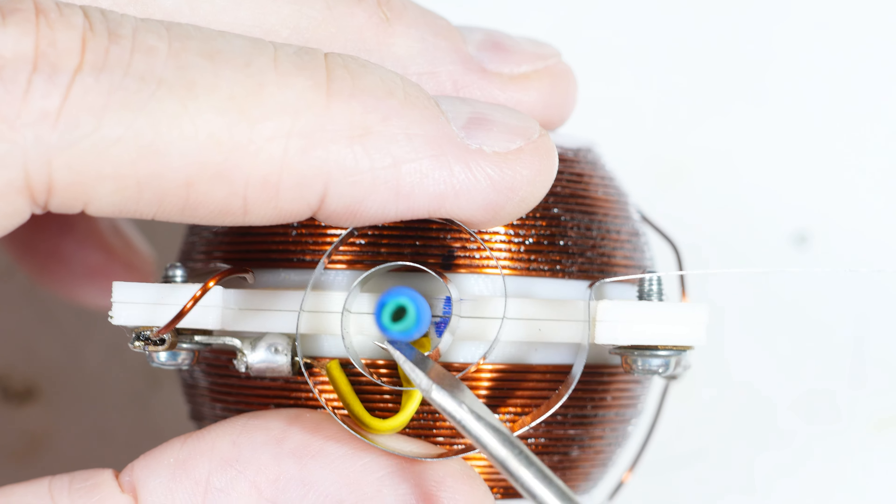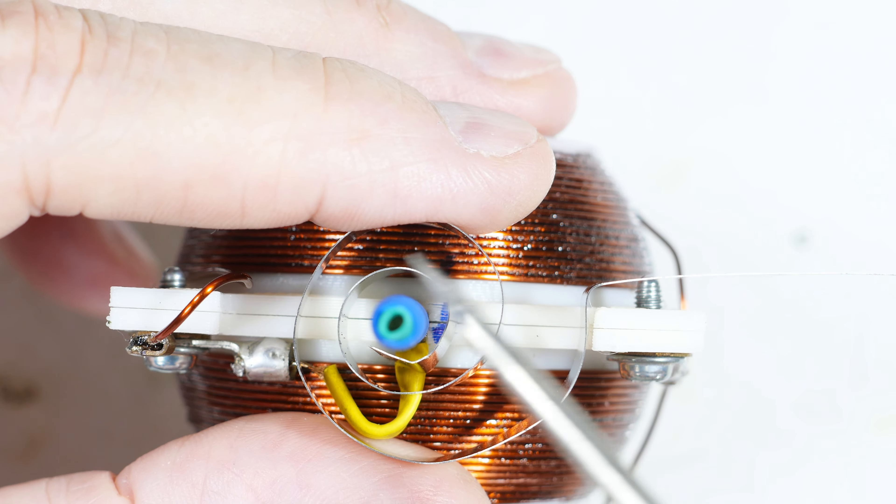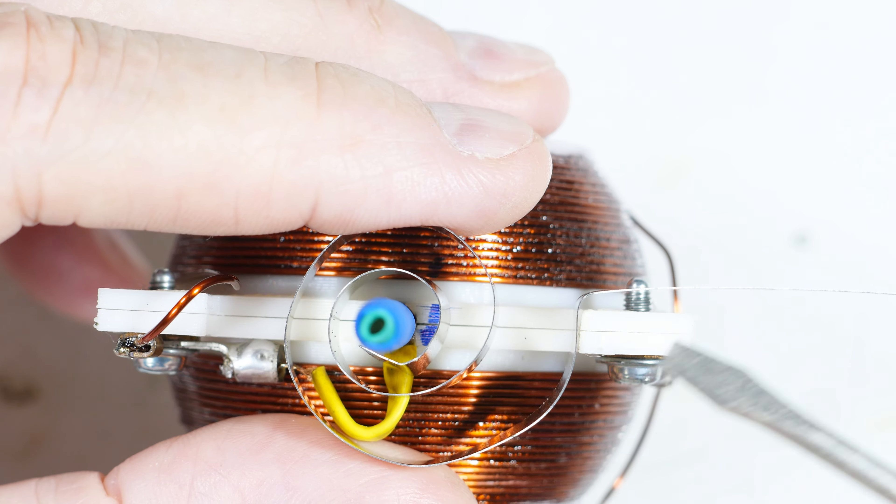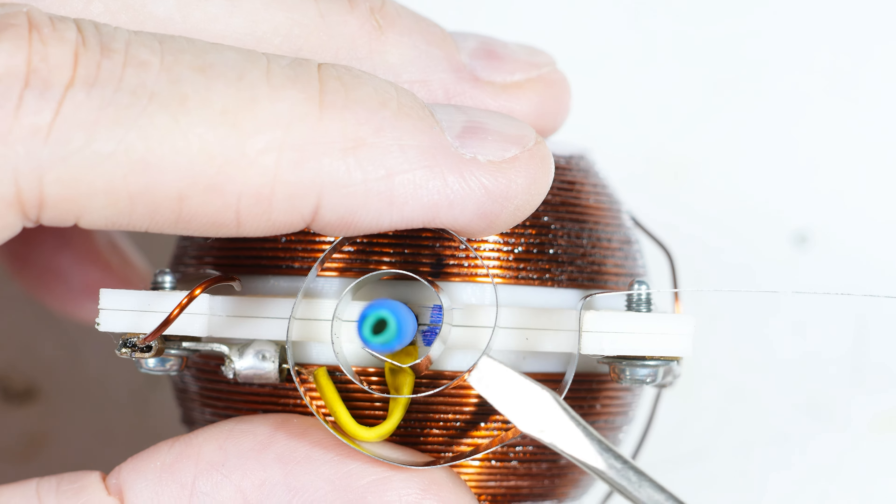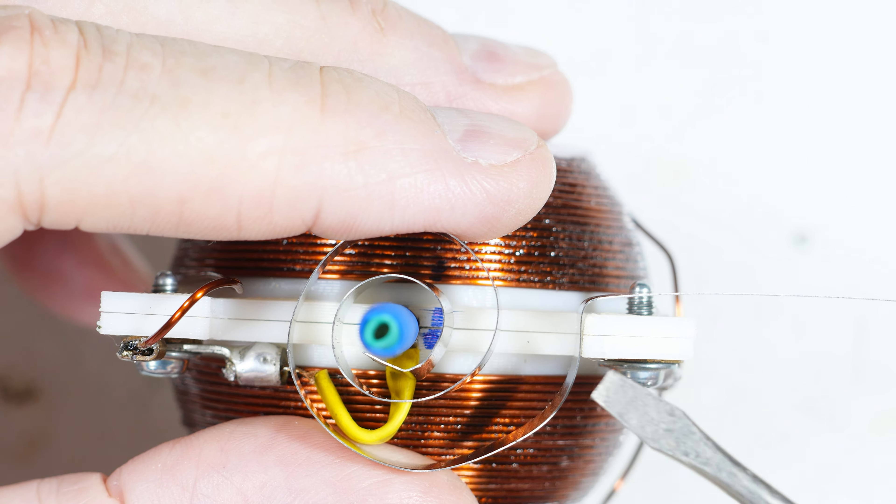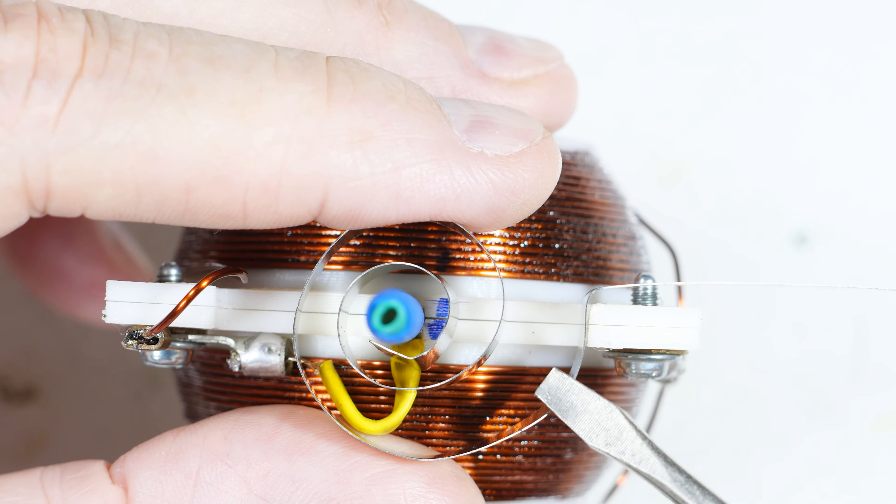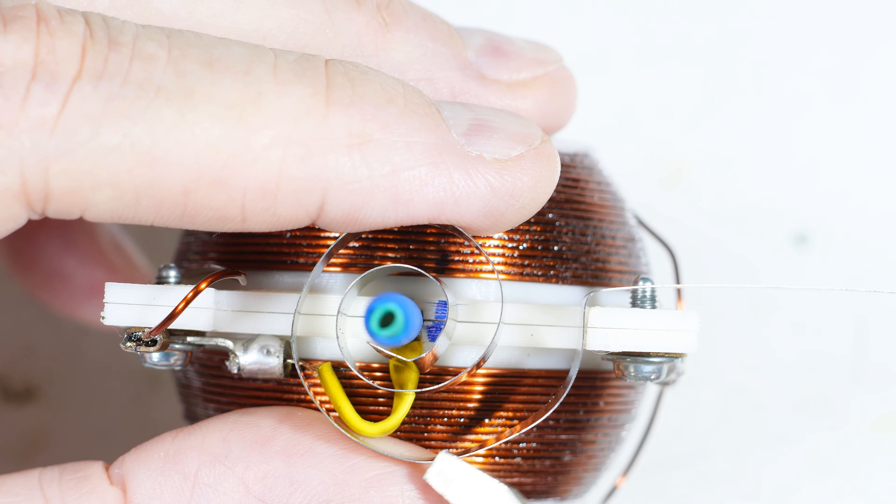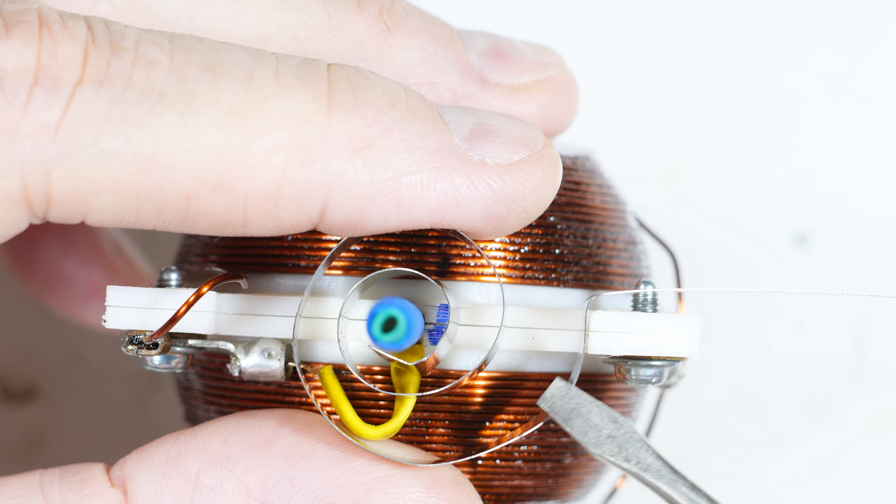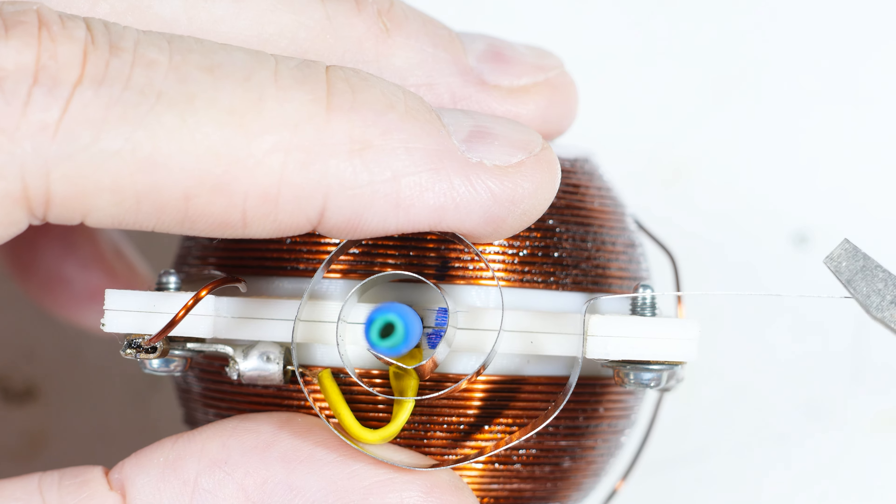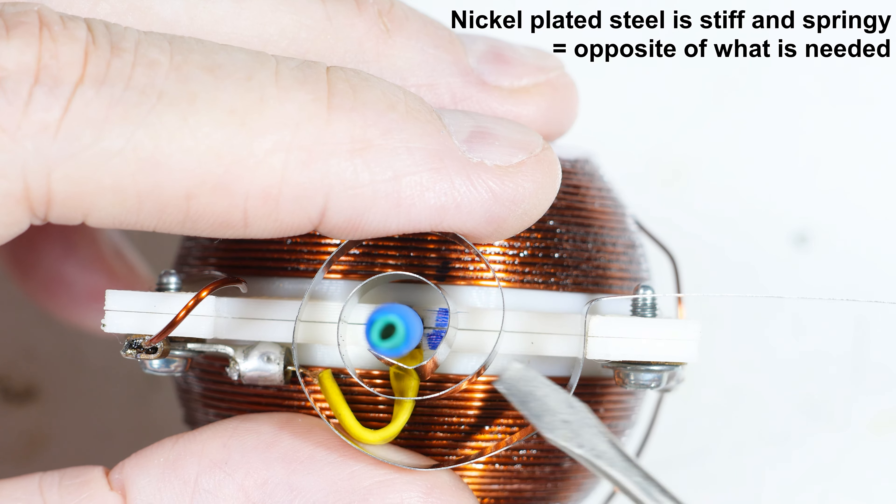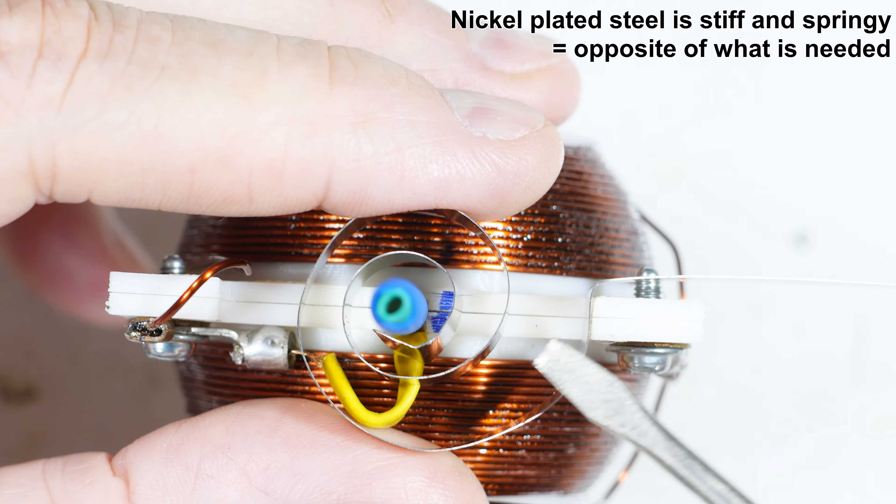The drawback, as I already pointed out, is this is kind of stiff. This is supposed to be pure nickel. Nickel doesn't work harden—you can bend it back and forth a lot before it breaks. But this turns out to be nickel-plated steel, and everything I ordered online that claimed to be pure nickel was nickel-plated steel.